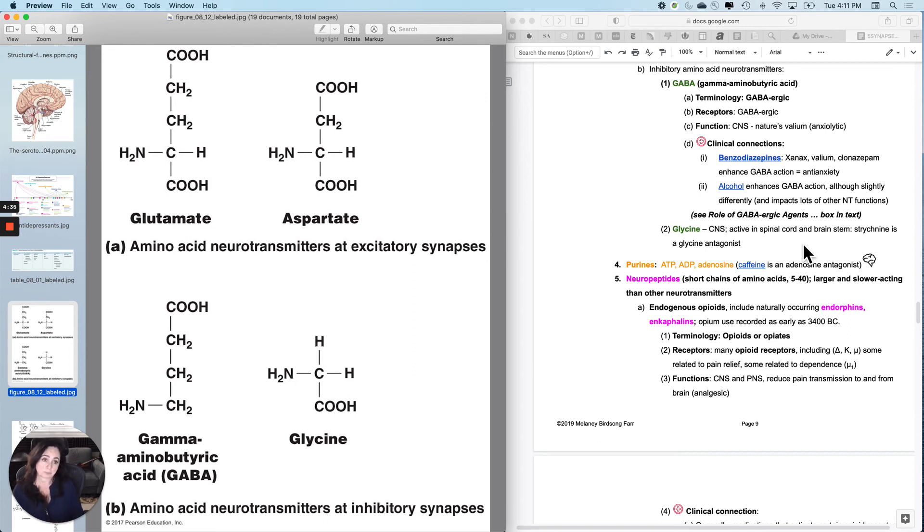And then alcohol also enhances GABA's action, but slightly differently than benzodiazepines. Alcohol also has a lot of other neurotransmitter functions with a lot of other neurotransmitters, but the chill out that you get when you have a sip of wine, that calm, that muscle relaxant that you feel.